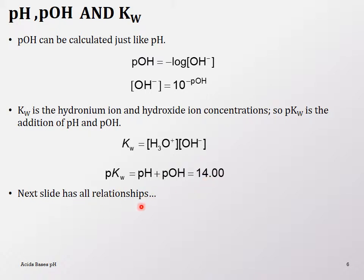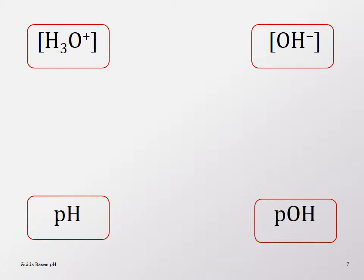The next slide has all the relationships summarized in a chart. You have hydronium ion concentration, hydroxide ion concentration, hydroxide to pOH, and hydronium ions to pH — and the relationship between hydronium and hydroxide ion concentrations.